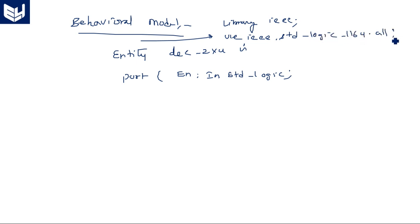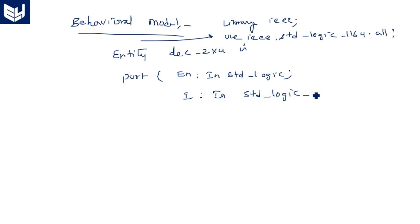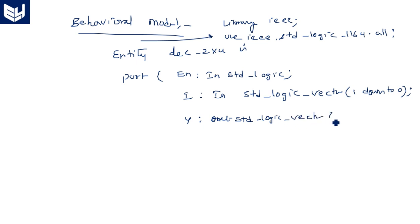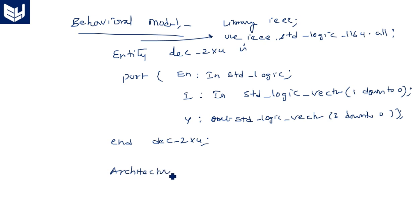The package 'std_logic_1164.all' is included; you can also optionally add 'std_logic_unsigned.all'. The inputs and outputs are declared separately: i is input as std_logic_vector(1 downto 0), and y is output as std_logic_vector(3 downto 0). End entity decoder_2to4.